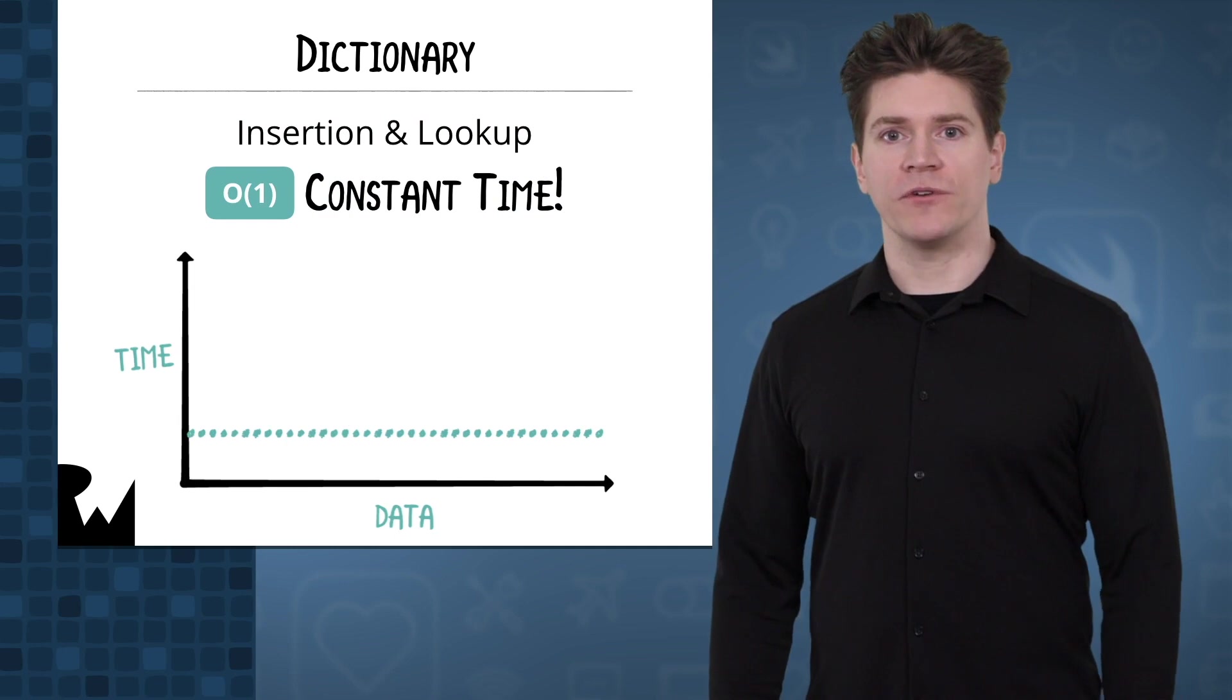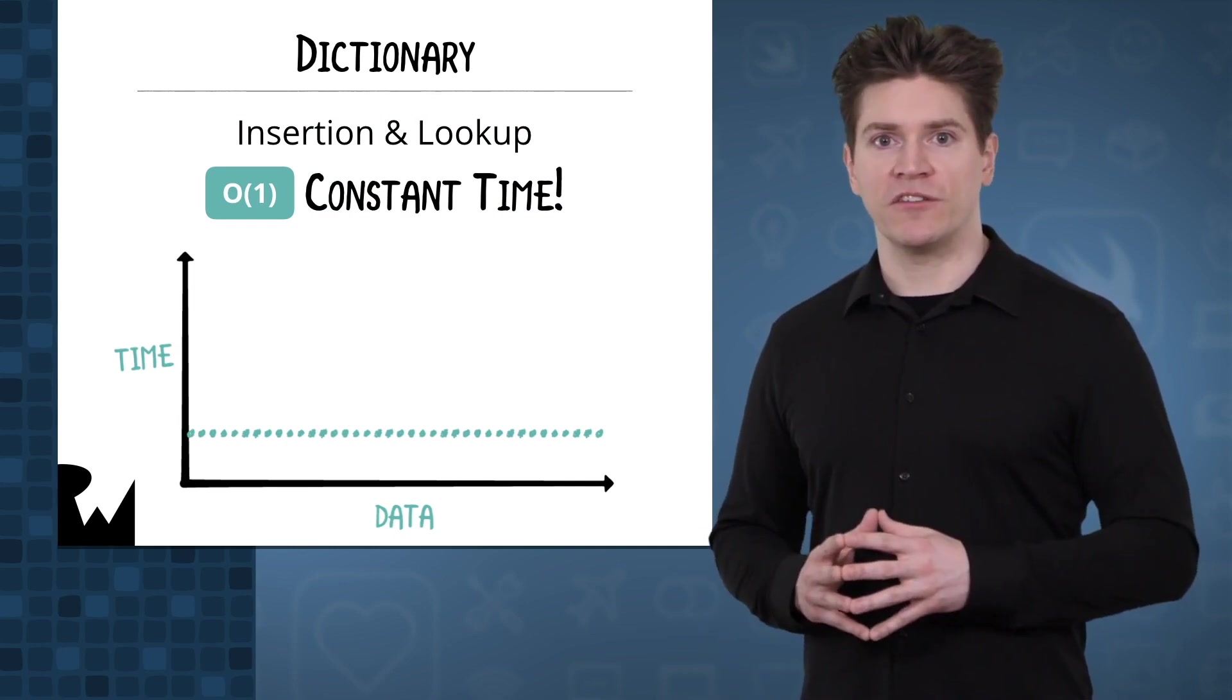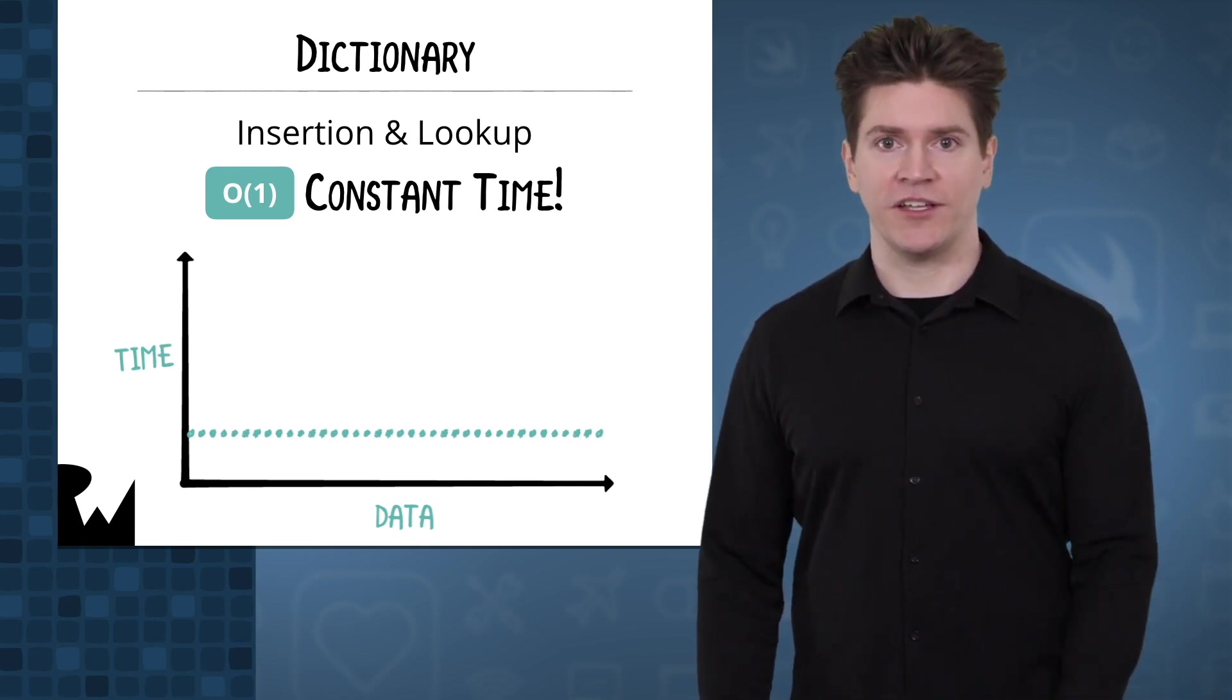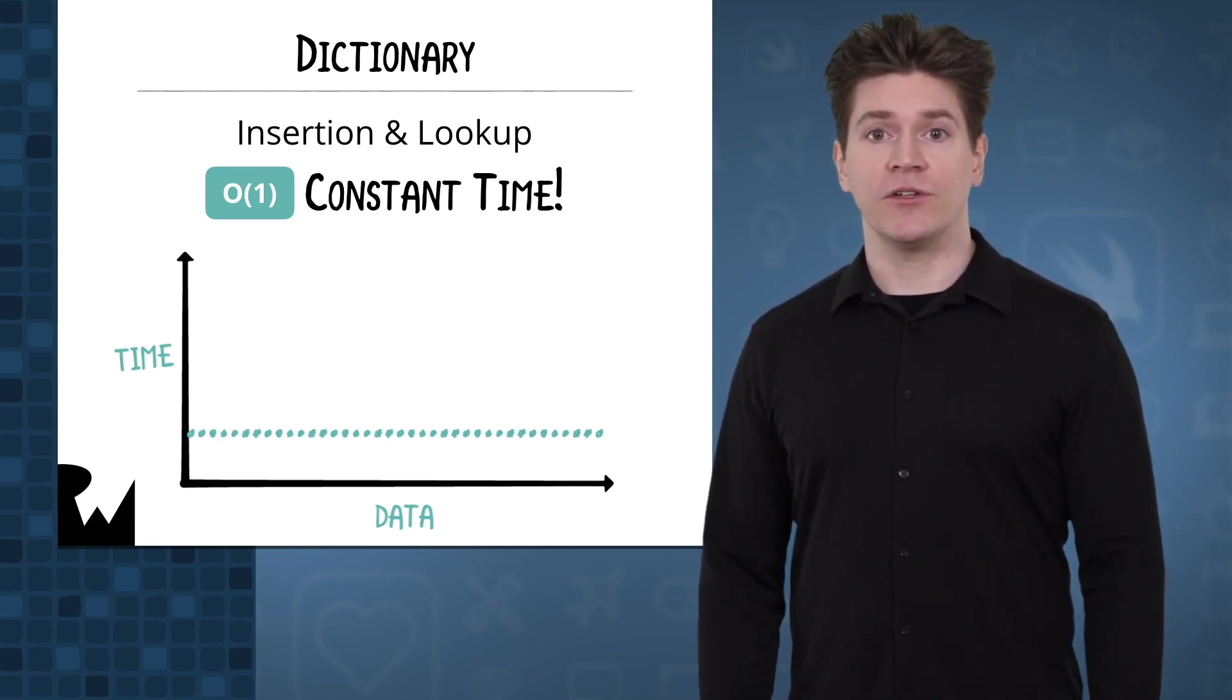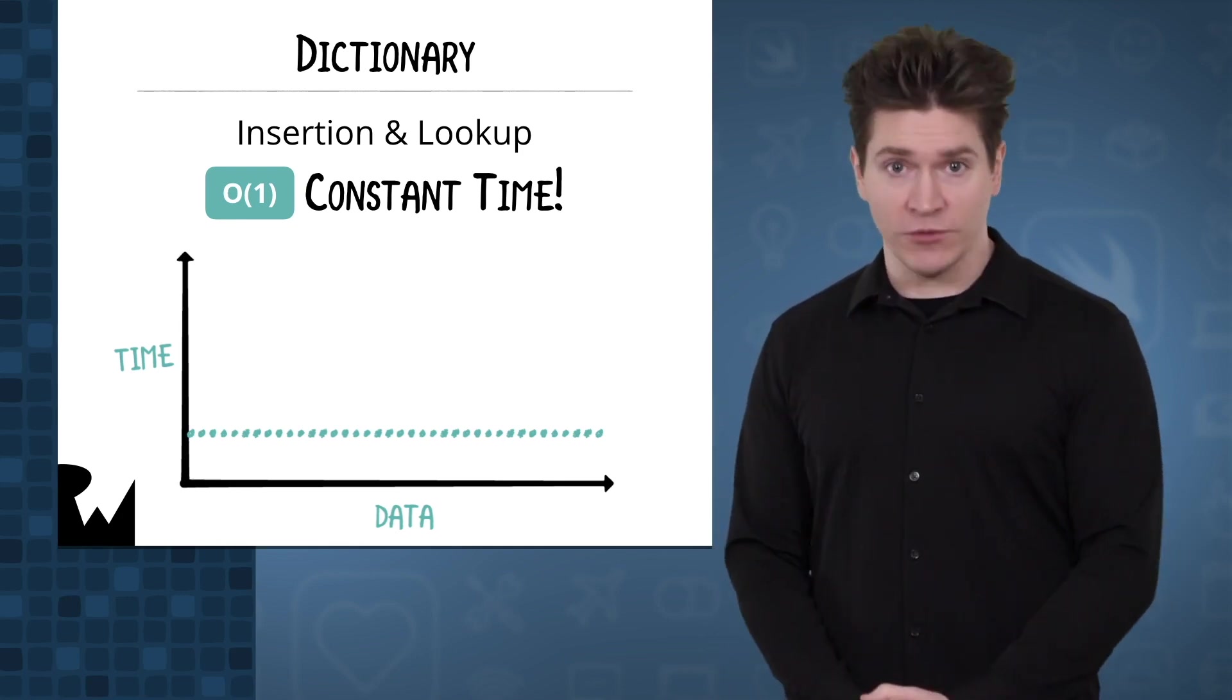That lack of guaranteed ordering gives you some performance benefits though. While the time complexity varies when inserting into an array, inserting elements into a dictionary is always a constant time operation. Dictionary lookup operations are also constant time, whereas searching through an array gives you linear time.